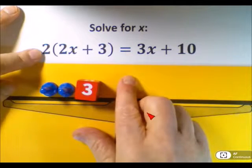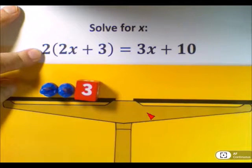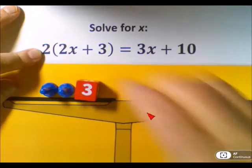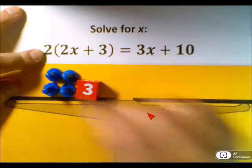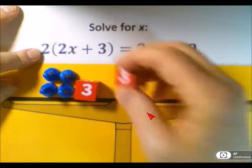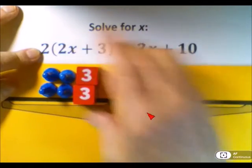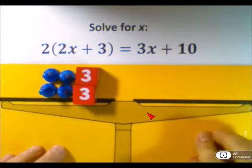We uncover the number. That 2 outside the parentheses tells us to double what is inside the parentheses. So we have another 2x's plus 3. And on the right side of the equation, we have 3x plus 10.